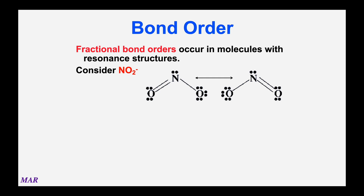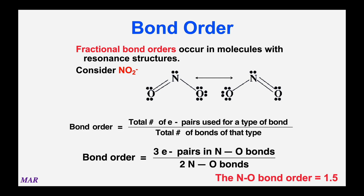You can have a fractional bond order like 1.5 if you have a resonating structure. Here's the resonating structure for nitrite, NO2 minus one. Everything is paired, but there's a choice where the double bond goes — left or right. For resonating forms, take the total number of electron pairs used in the resonating bond and divide by the number of places they can go. Whether using left or right, there's a total of three bonds, and those three lines can go to either of two places. So three pairs divided by two places is a bond order of 1.5.